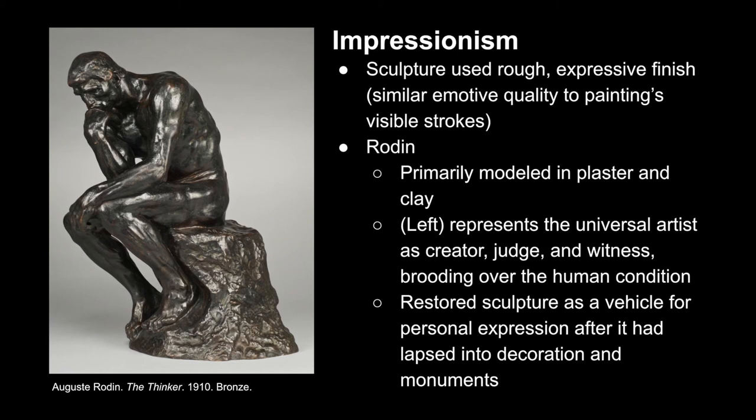August Rodin's The Thinker is a great example of Impressionist sculpture. While he primarily modeled his works in plaster and clay, they were later cast in bronze, which created the final sculpture. The Thinker is a representation of an artist themselves, struggling between creator, judge, and witness, brooding over the human condition itself. Rodin's work restored sculpture as a vehicle for personal expression, pulling it out of the context of merely decoration or monument.